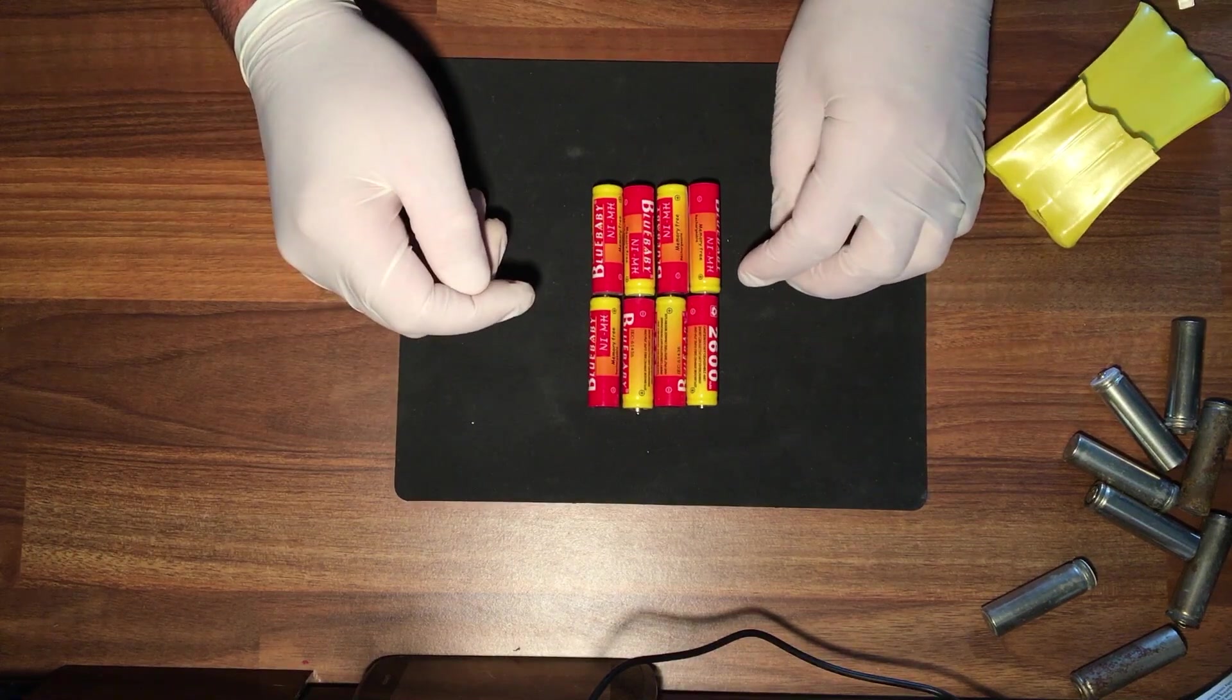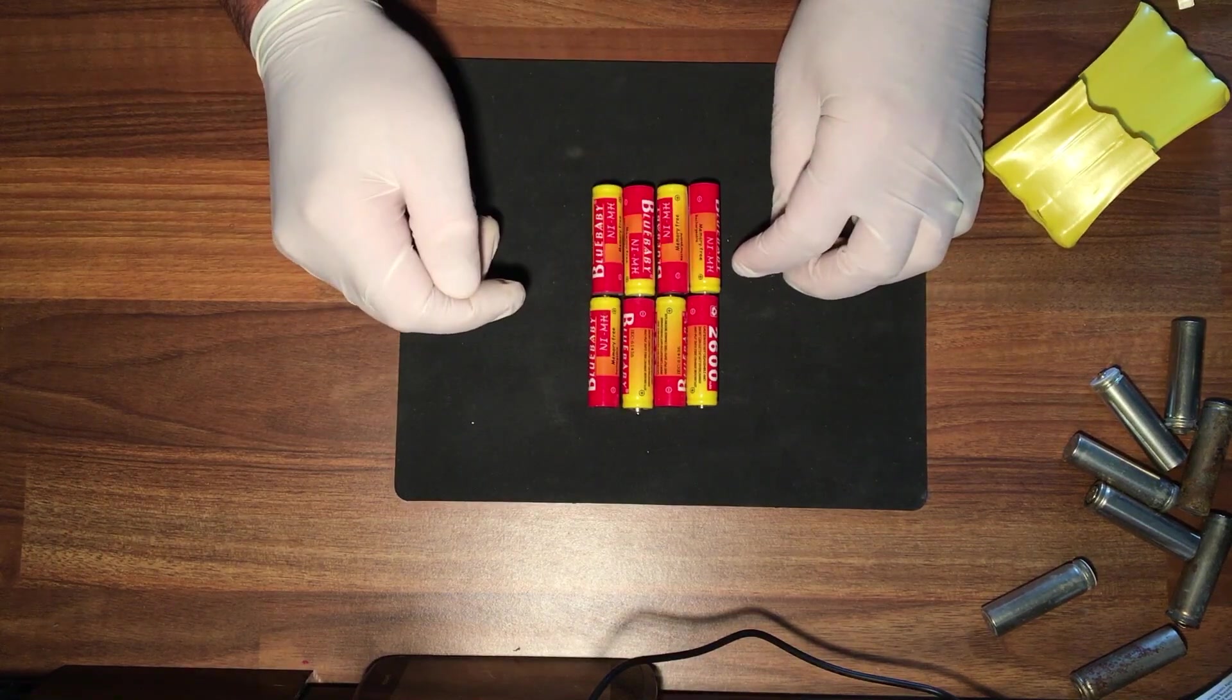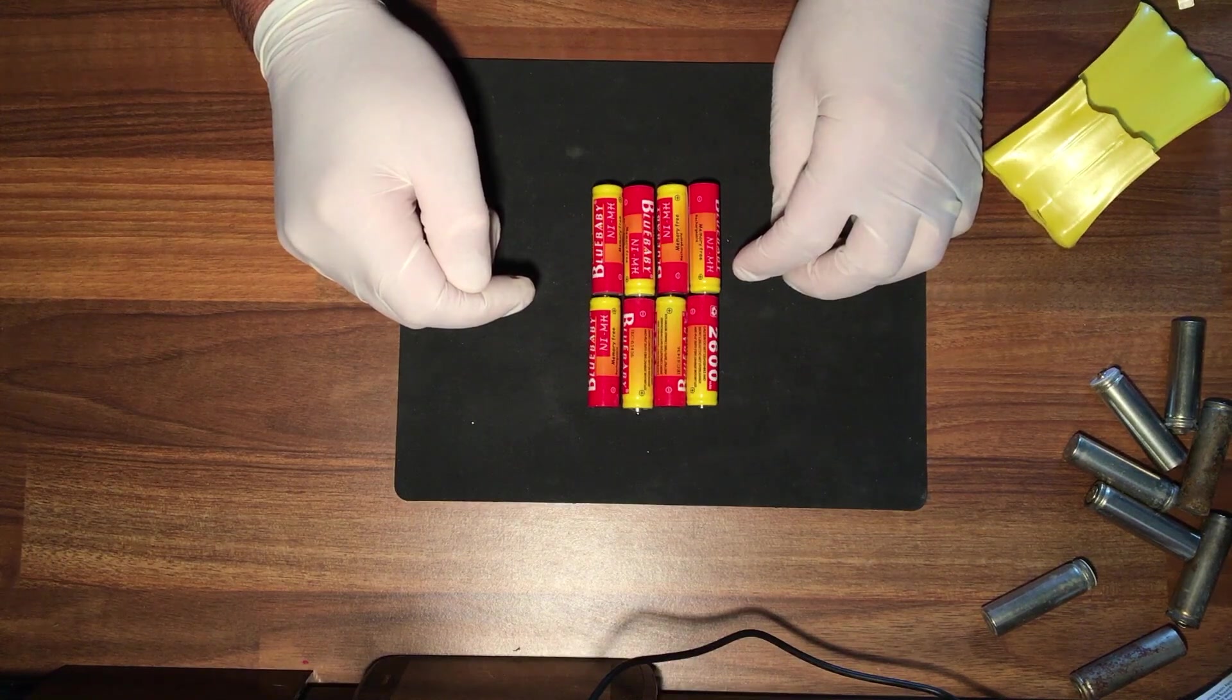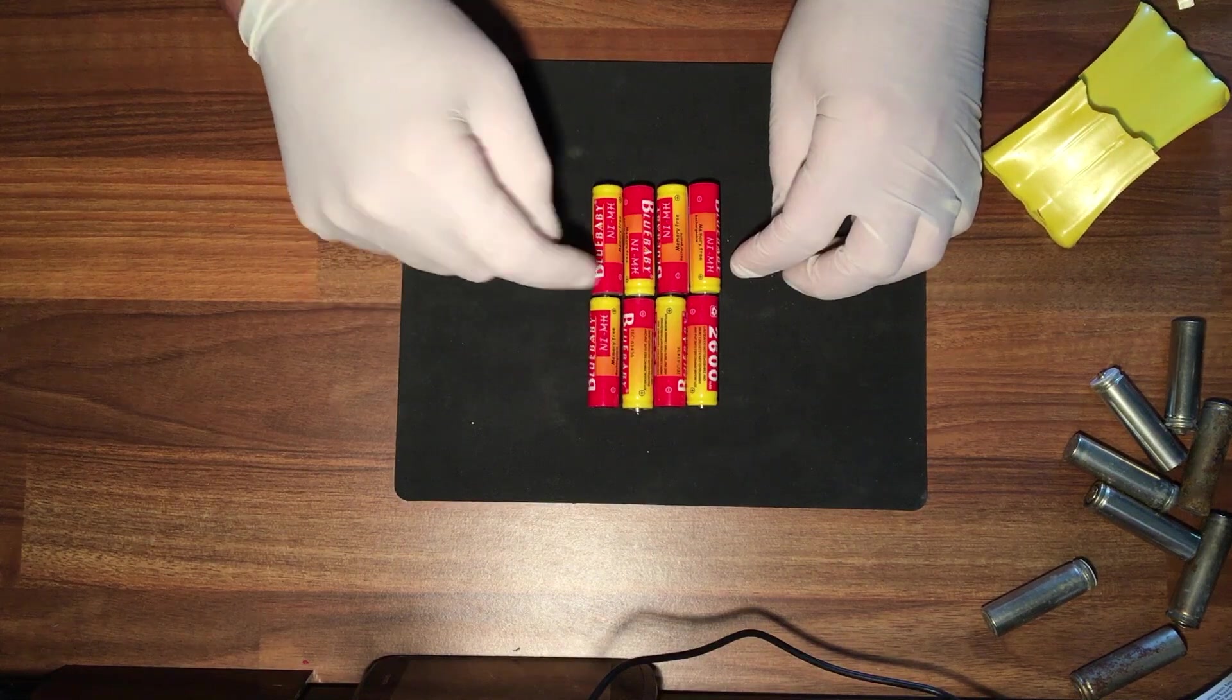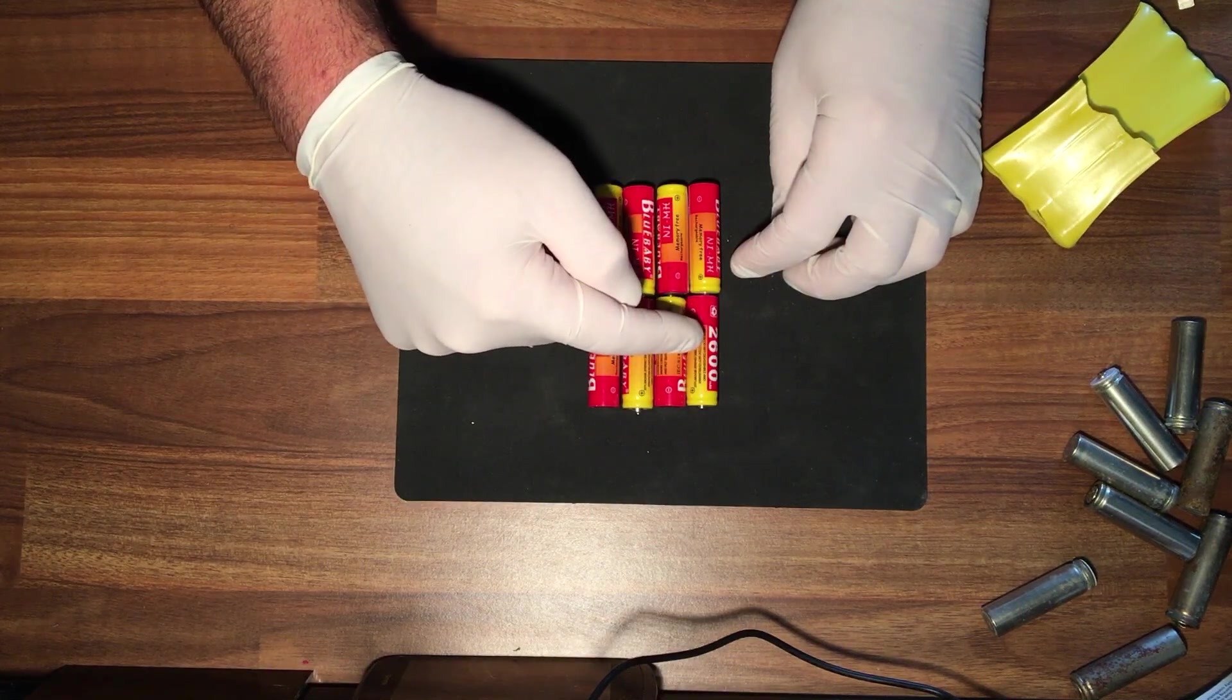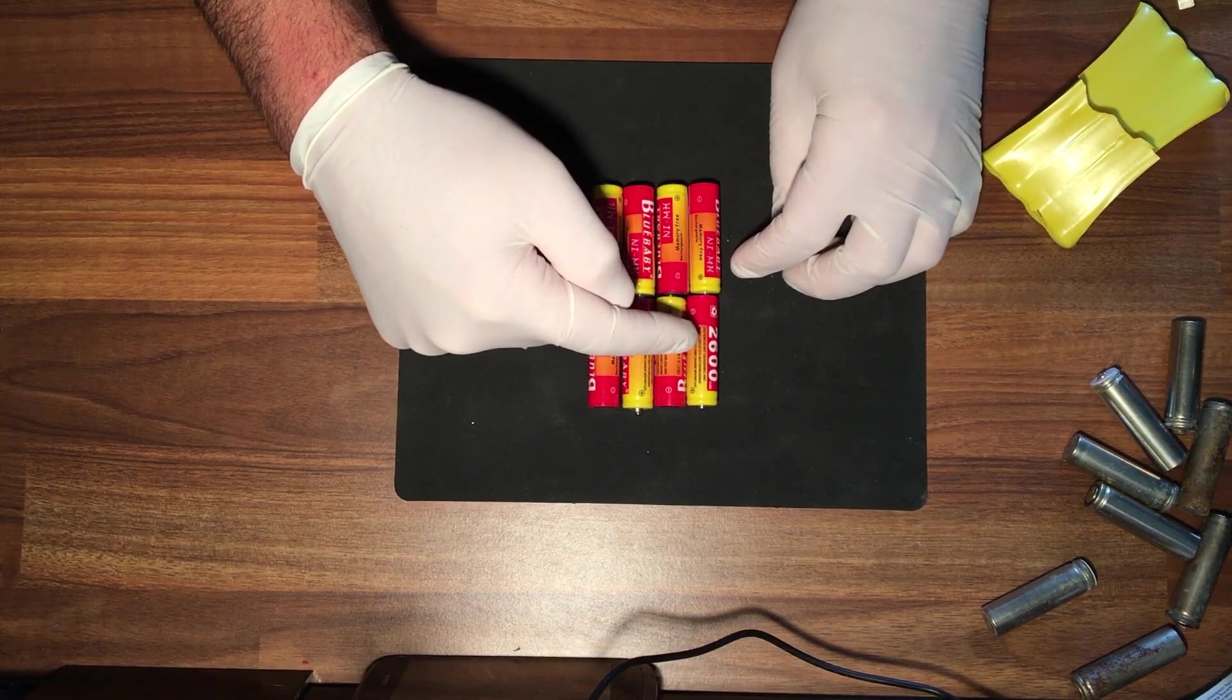So what we need to do now is join these all together and it will bring it up to 9.6 volts. Now when you're joining in series, you retain the output which is the 2600 milliamps.